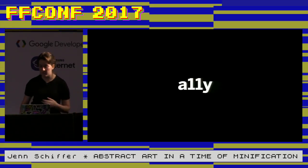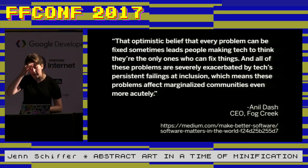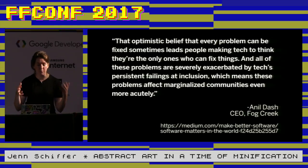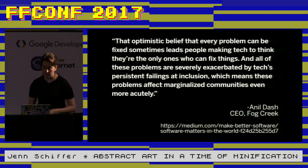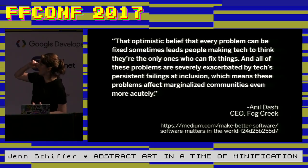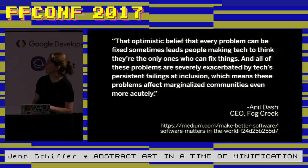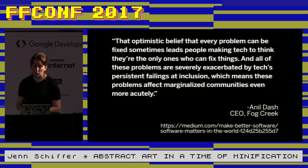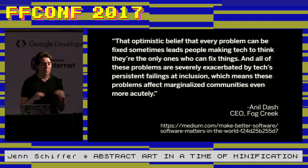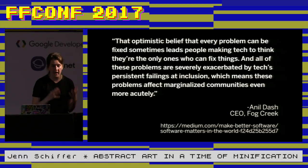Sometimes it seems like you have to either advocate for accessibility or web performance as if they don't go hand in hand — they do. It just takes some work. And I feel like lately engineers are almost proud of avoiding work, which blows my mind because in the same breath we take to say accessibility is hard, we will talk about how important all the work that we are doing is. My boss and CEO of Fog Creek, Neal, said that the optimistic belief that every problem can be fixed sometimes leads people making tech to think they're the only ones who can fix things. And all of these problems are severely exacerbated by tech's persistent failings at inclusion, which means these problems affect marginalized communities even more acutely.